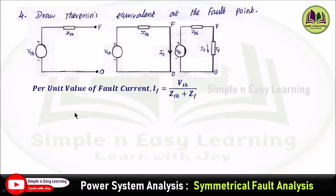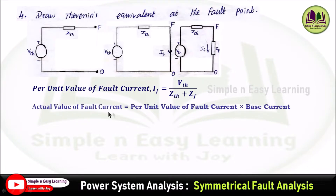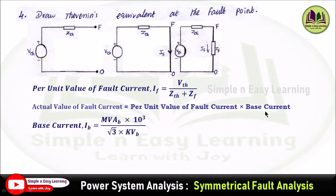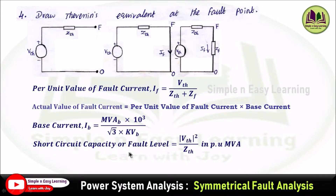We need to calculate the fault current. The per unit value of fault current I_F will be equal to V_Thevenin divided by Z_Thevenin plus fault impedance Z_F. The actual value of fault current equals the per unit value multiplied by the base current. The base current expression is: MVAB × 10³ divided by root 3 times KVB, where MVAB and KVB are the base values. Short circuit capacity or fault level can be estimated as V_Thevenin squared divided by Z_Thevenin in per unit MVA.